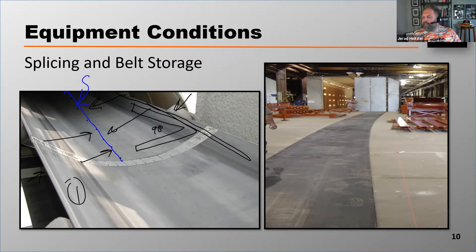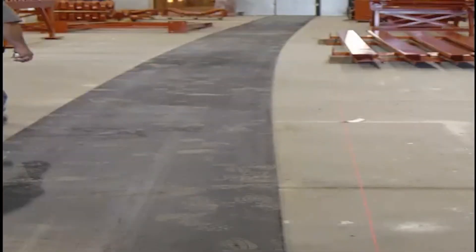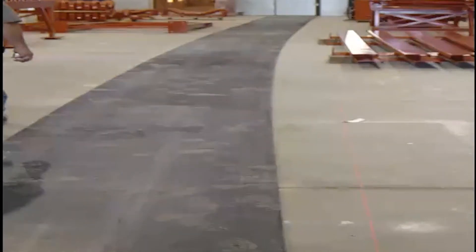Another concern: stand at the tail pulley and watch that belt. If it slowly walks to one side and then eventually comes back, that's a little bit different. That's called camber. What you're seeing is a curvature in that belt.